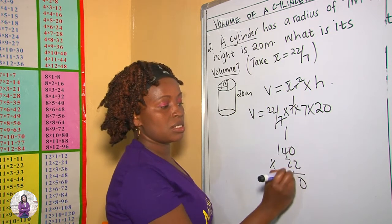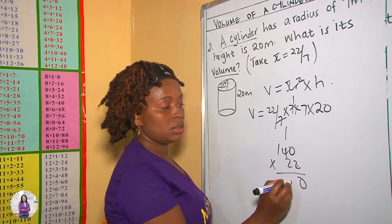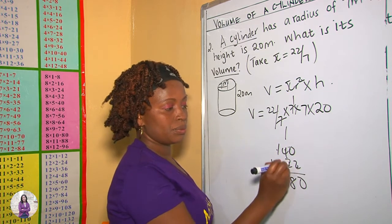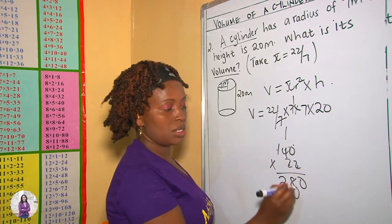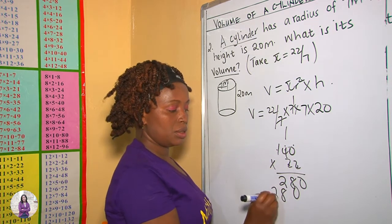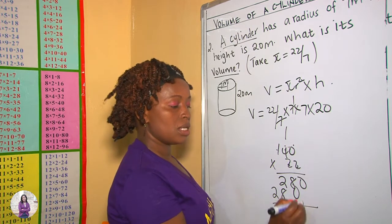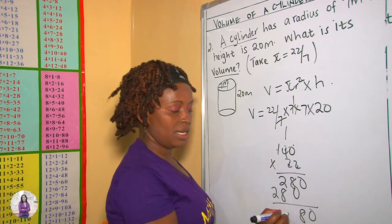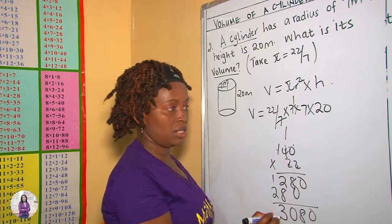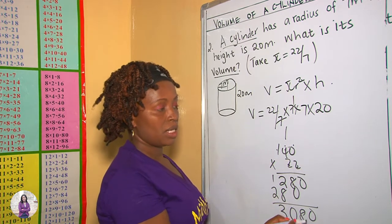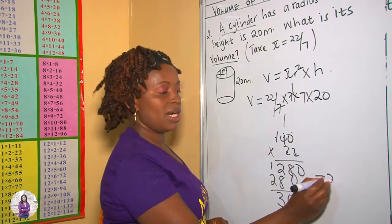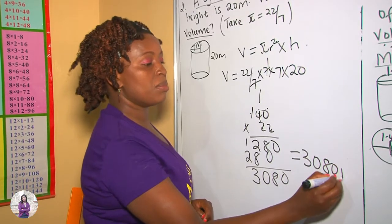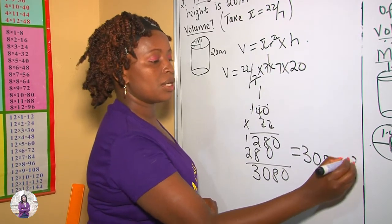Working through the multiplication: 22 times 140 gives us 3,080. Therefore, the answer is 3,080 meters cubed.